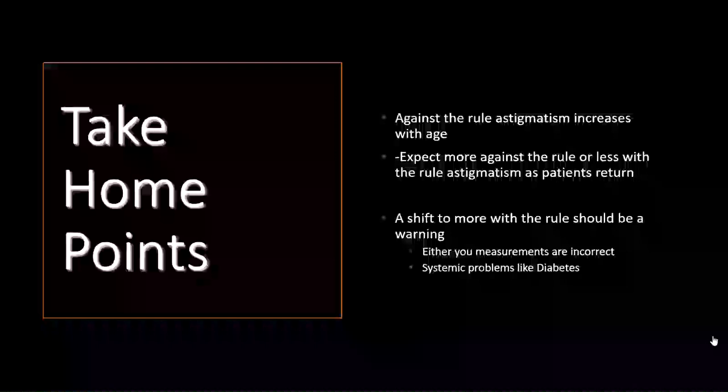So what's the take-home point if we don't use Javal's rule all that much in clinic? Well, the first and biggest reason is Javal's rule is on the boards. But more importantly, what's the take-home? Against the rule astigmatism increases with age. Expect more against the rule or less with the rule astigmatism as patients return. So if a patient comes back for a follow-up visit and they're a little more against the rule, that's totally normal. However, if you see a shift to more with the rule, that should be a warning to you that you've either perhaps made an error or maybe there's underlying systemic problems like diabetes and their blood sugar has induced changes in the lens.